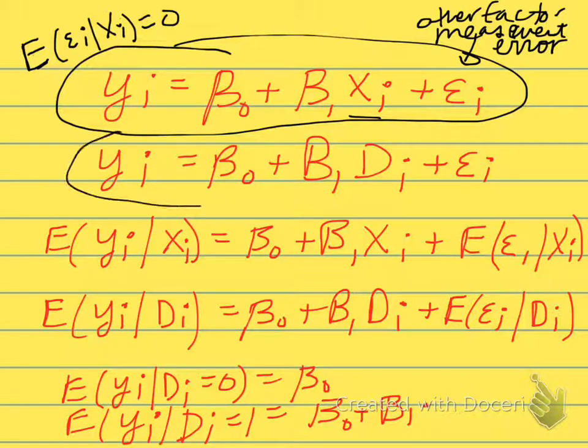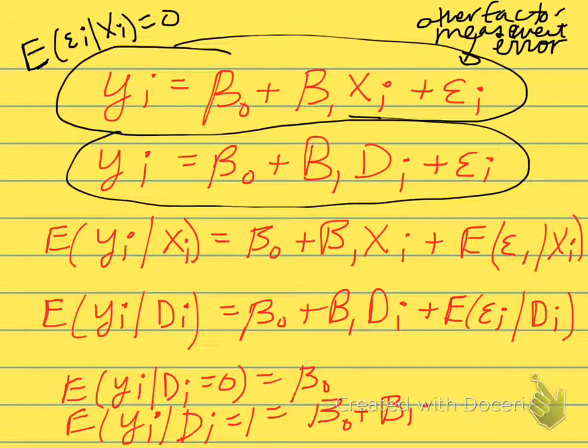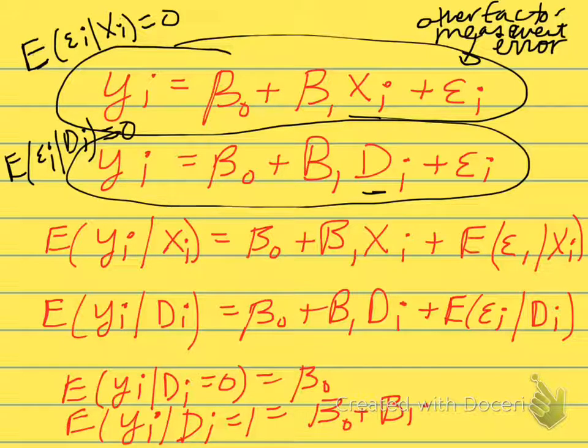Now if we have a dummy variable, we can rewrite this. It looks exactly the same, just have di instead of xi. And we'd have the same condition: the expected value of the error term, conditional on the dummy variable, is equal to 0. So that would be our analogous assumption.